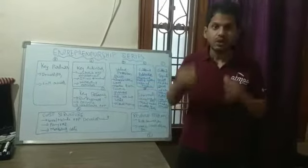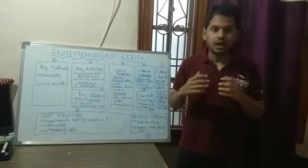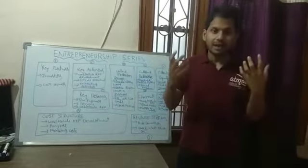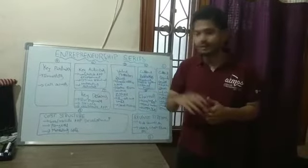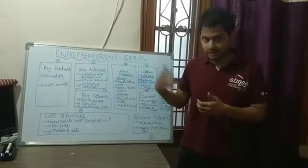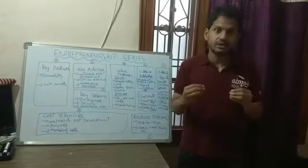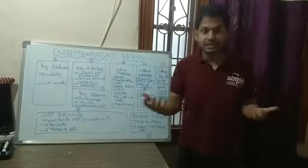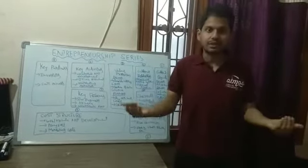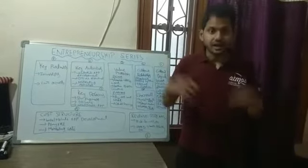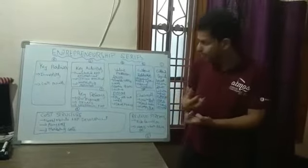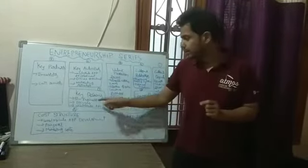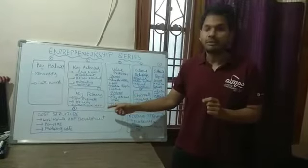Then coming to key resources — what are your key resources to run your startup? For Uber, you should have a software engineering team, because you need to develop web and mobile app platforms. The key resources also include an artificial intelligence team, because you need to change rates as per timing and traffic and show where the car is. And drivers are also a key resource — without drivers, they can't run their company.